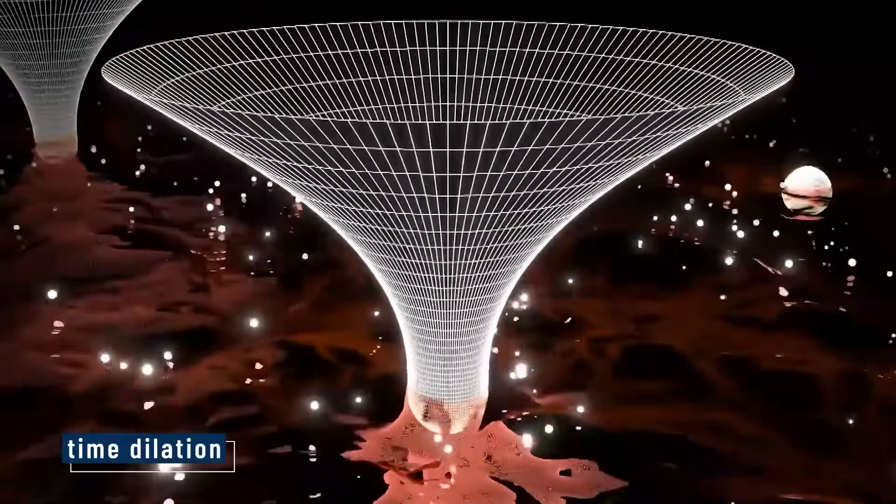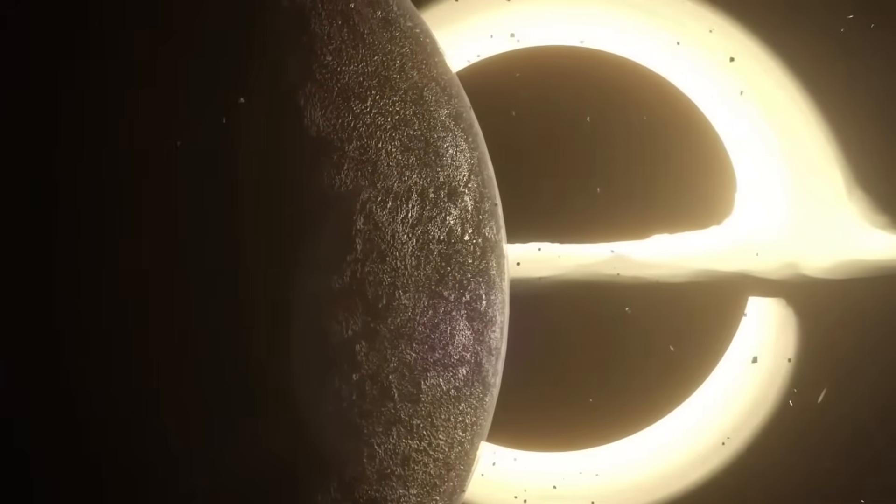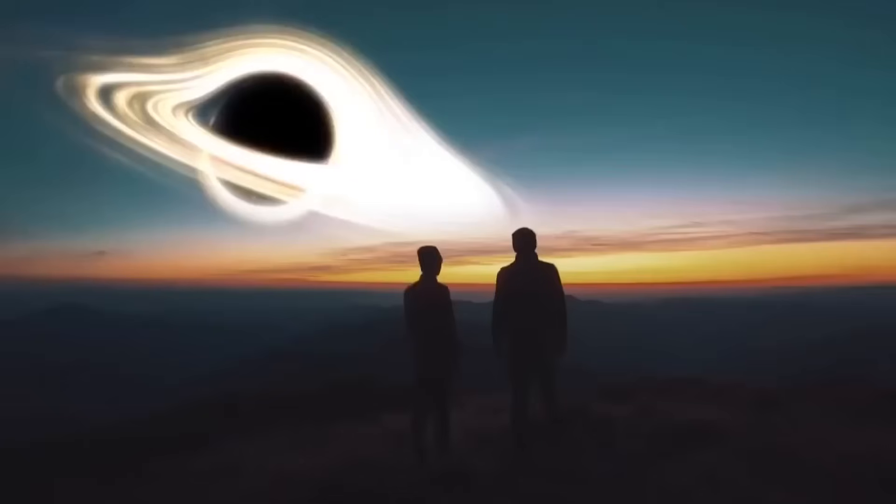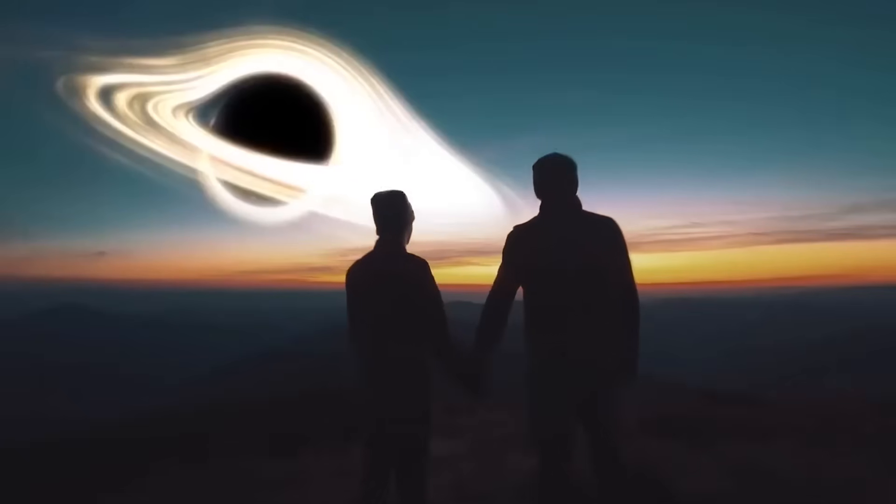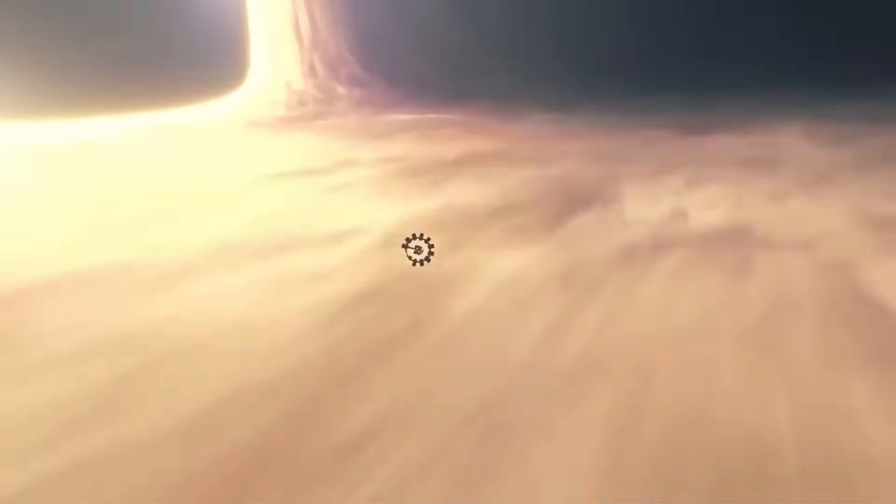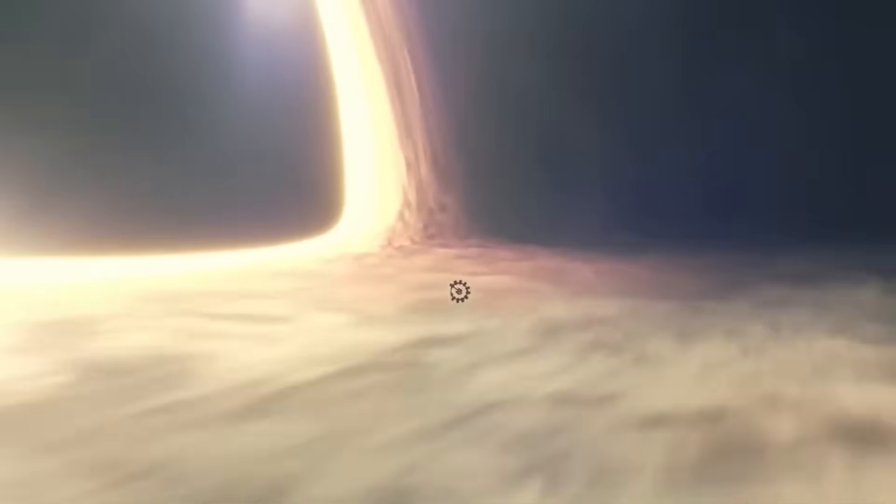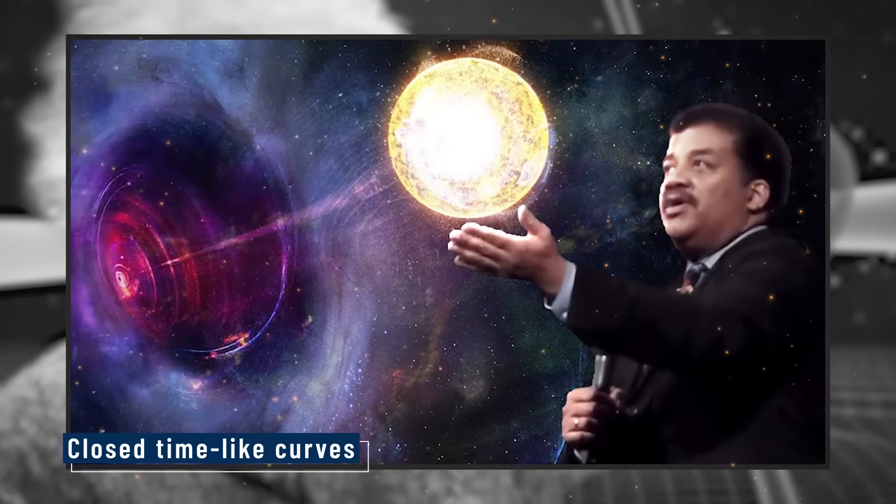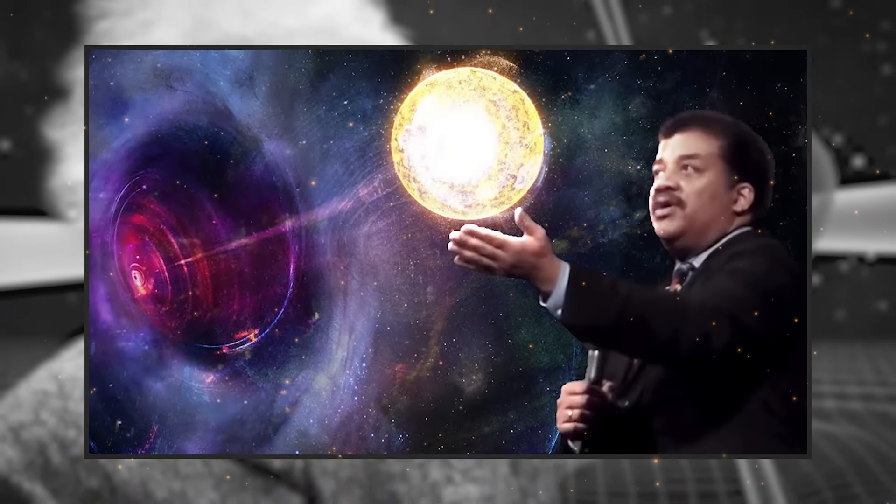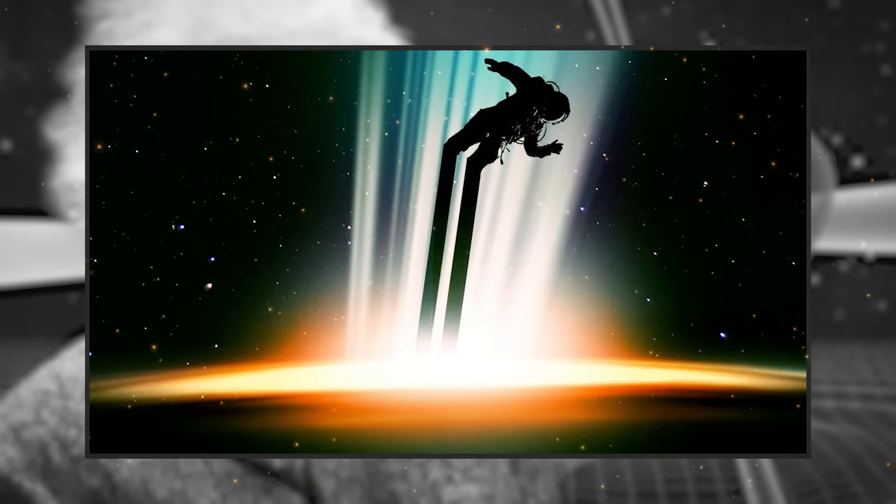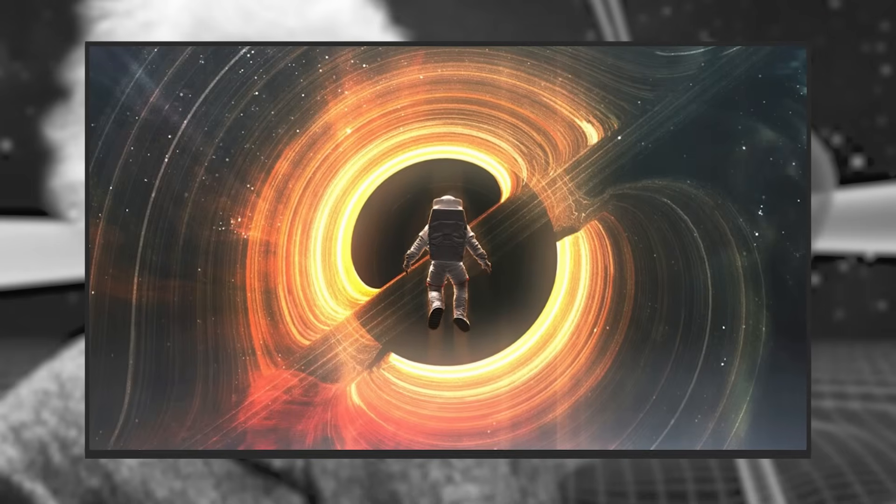There's also time dilation. Near a massive black hole, time moves slower. If you spent one year close to a black hole, decades could pass elsewhere. This isn't fiction. It's predicted by Einstein's relativity. Another wild idea? Close time-like curves. These theoretical paths could loop through time, letting you return to your own past. They remain unproven, but mathematically possible.